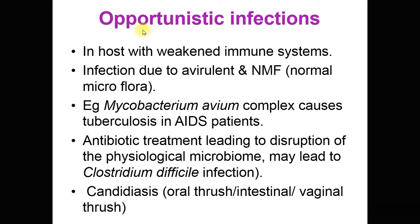The next type is opportunistic infection. These infections are caused by opportunistic pathogens — not in a normal host, but in a host with a weak immune system, due to some immunodeficiency condition like AIDS or because of the prolonged use of steroids.